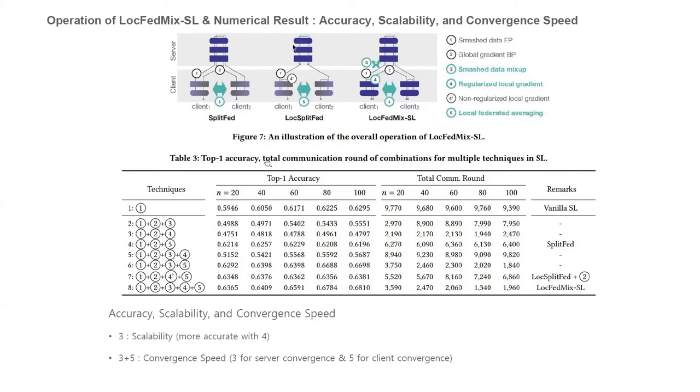Regarding scalability, Table 3 reports the top-one accuracy and total communication rounds for several combinations of different techniques. Our proposed LocFedMixSL, which is algorithm number eight, achieves the highest accuracy regardless of N and always records the top performance in terms of convergence speed. And Table 3 also shows that scalability is guaranteed under algorithm 1, as well as under algorithms 2, 5, 6, and 8. The common feature of the algorithms that guarantee scalability except for vanilla split learning is the use of technique 3, SMASH data mixer. The effectiveness of SMASH data mixer is bolstered by number four, local loss regularization, as shown by comparing algorithms 2, 5 with 6, 8 in Table 3.